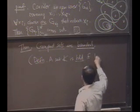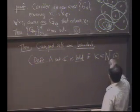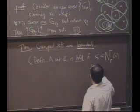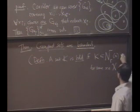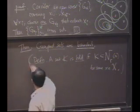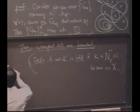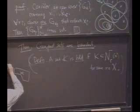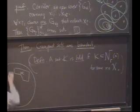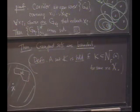If K is in, I'll say it this way, N sub r of x for some x in big X. OK, so if it's in a big enough ball, then the set is bounded. Picture. Here's a set K. Now the ball doesn't have to be centered around any particular point in K, could be just an x. This is a bounded set because it's in a big enough ball.